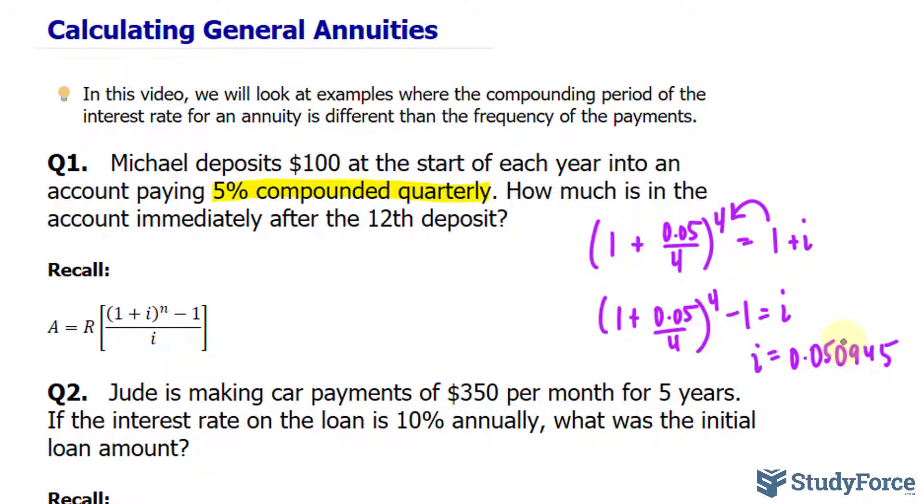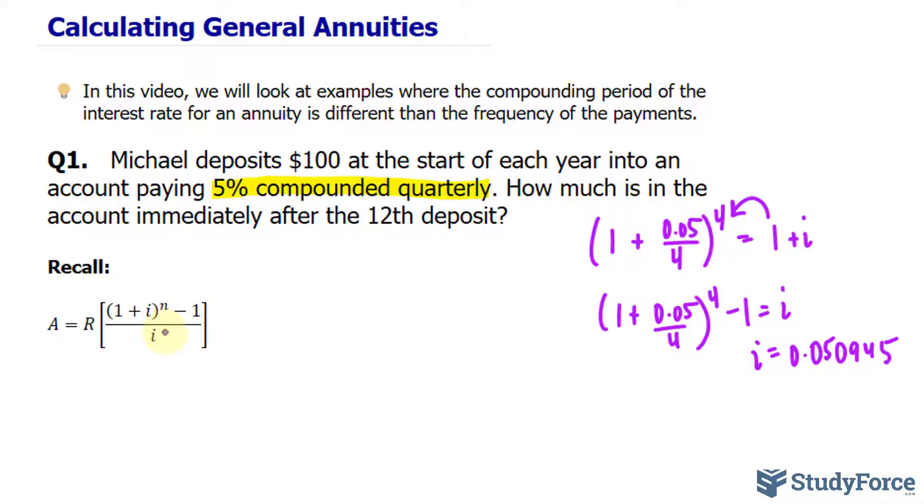If you round this too early, you'll end up getting an answer that's wildly different than what you're supposed to get. Here I've prepared the formula that we need to use. We are looking for the accumulated value after 12 deposits, which translates to 12 years. R represents the amount we're depositing, which is 100.